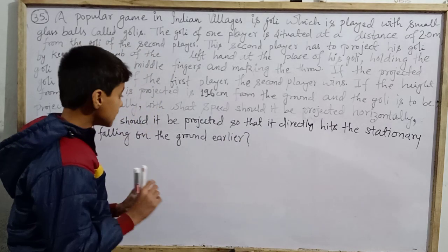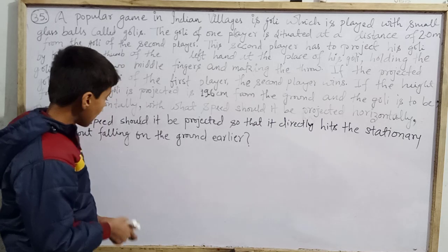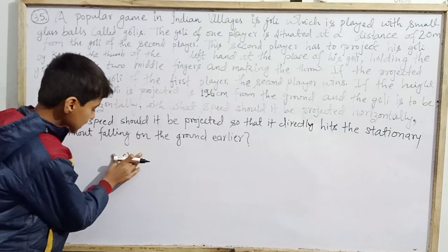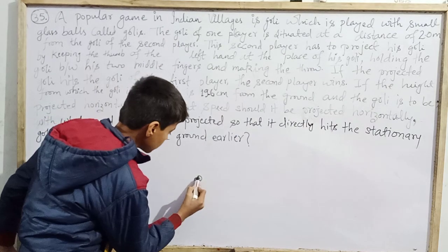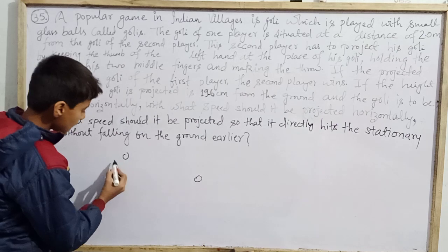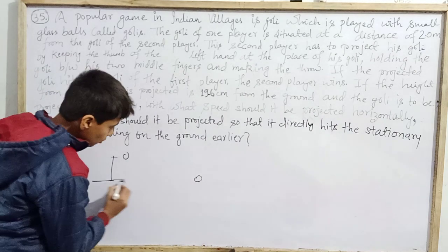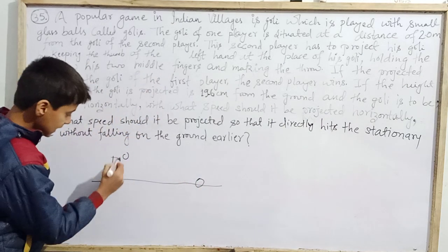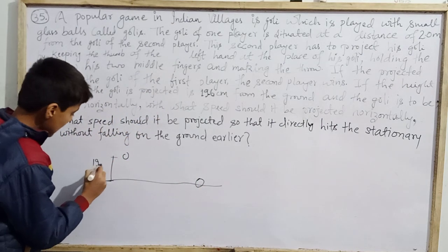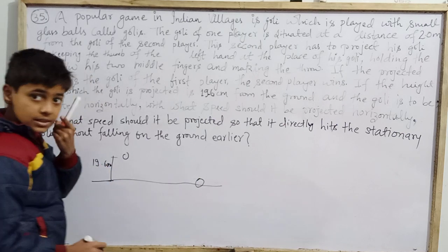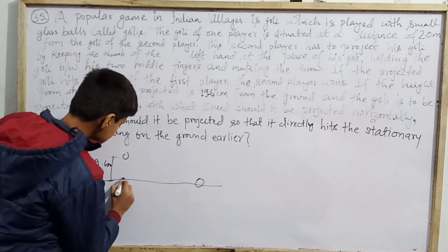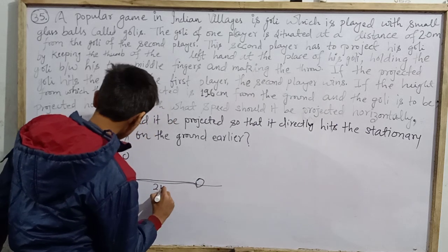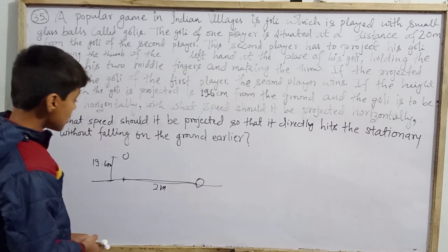So the goalie must directly hit the stationary goalie without falling on the ground earlier. Suppose you have a player here who has a goalie — this is like a marble. This height is from the ground; this goalie is on the ground. The height of this goalie from the ground is 19.6 cm, while the horizontal distance from this goalie up to the other goalie is 2.0 meters.